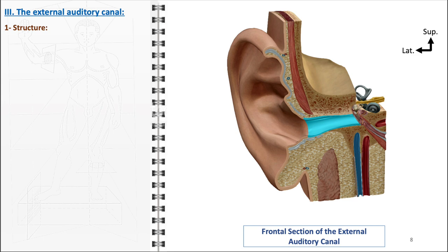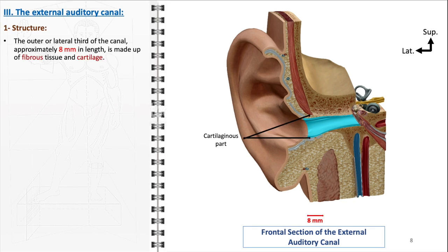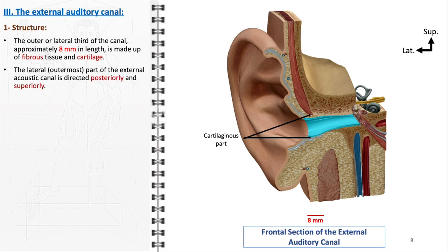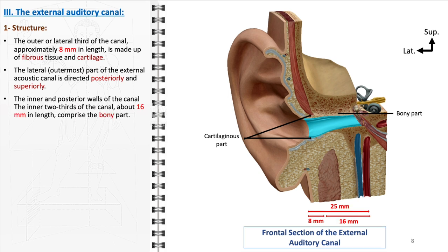The external auditory canal exhibits a complex structure divided into two distinct parts based on its composition. The outer, or lateral, third of the canal — approximately 8 mm in length — is primarily composed of fibrous tissue and cartilage. This cartilaginous section provides flexibility and resilience, allowing it to withstand various external pressures and movements. It is oriented posteriorly and superiorly to aid in effective capture of sound waves. In contrast, the inner two-thirds of the canal, about 16 mm in length, is made up of bone. This bony part provides structural integrity and protection, particularly to the tympanic membrane. The transition from cartilaginous to bony section is seamless, ensuring uninterrupted passage of sound.